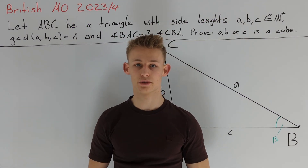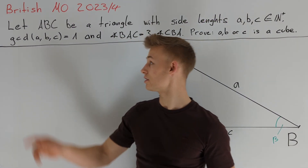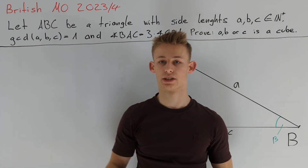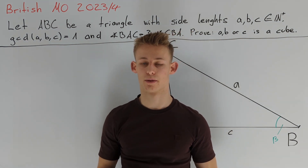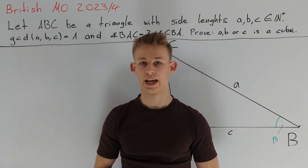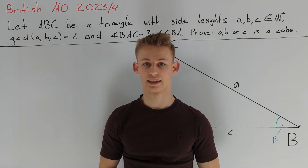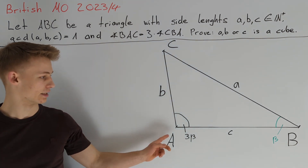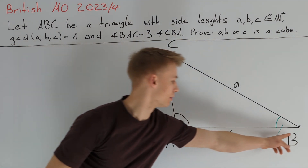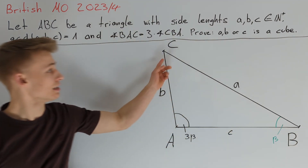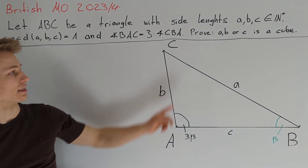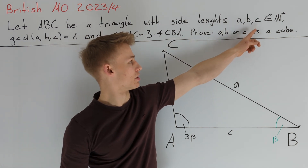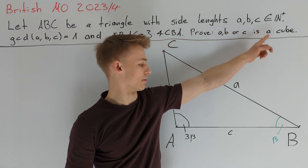Today I want to present a solution to the British Math Olympiad 2023 Problem 4. First, let's have a look at the problem statement. We have a triangle with vertices A, B, C and side lengths a, b, and c, which should be positive integers.